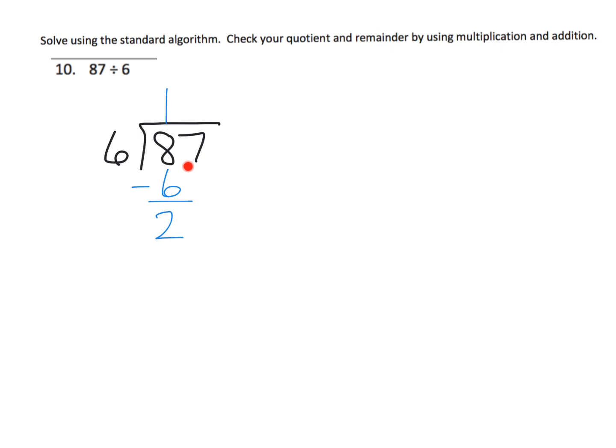Well, these 2 tens plus these 7 ones means we now have 27 ones left over. So we have 27 ones, and we're going to divide those amongst the 6 groups, which means each group is going to get 4. So that means we've used 24 dots. We have 3 left over. So our answer is 14, remainder 3.